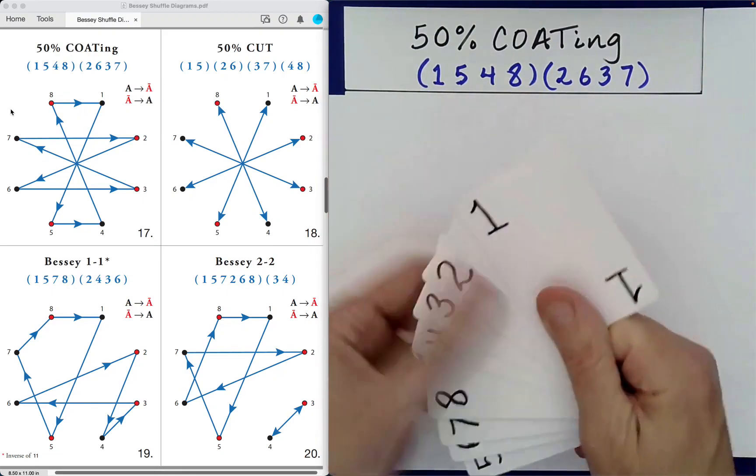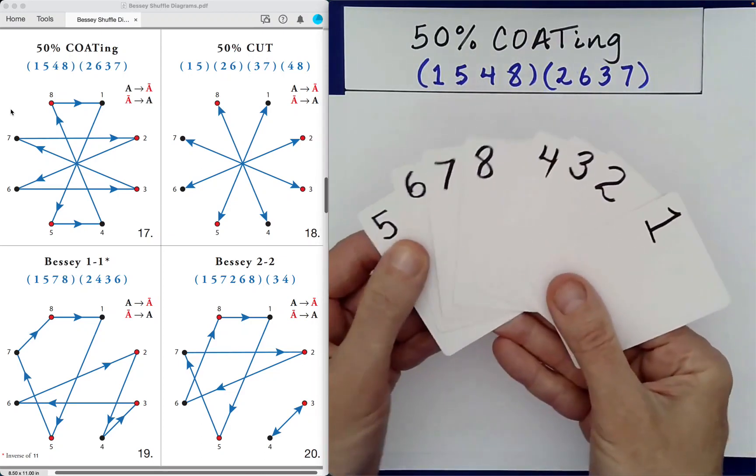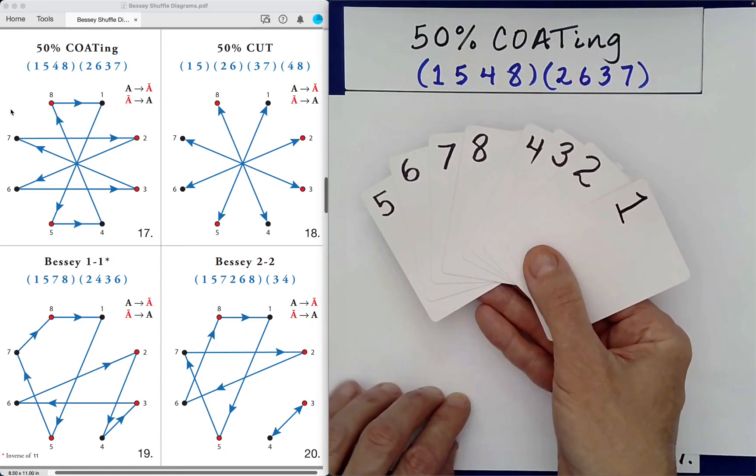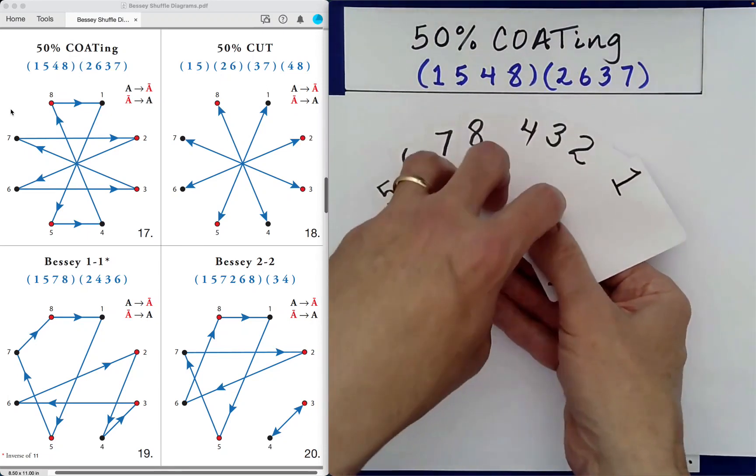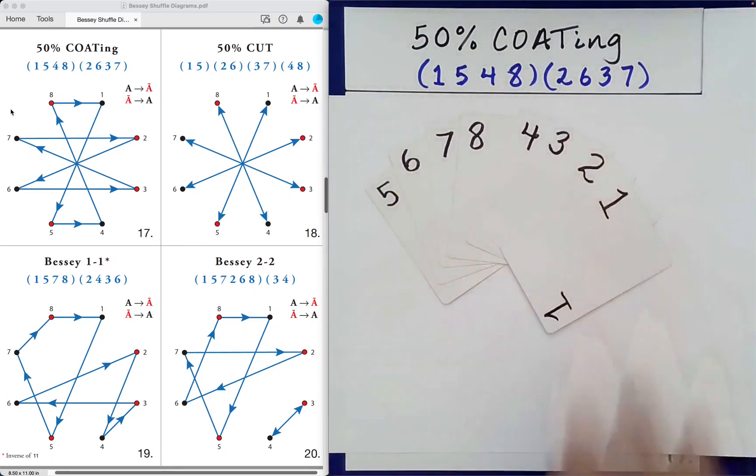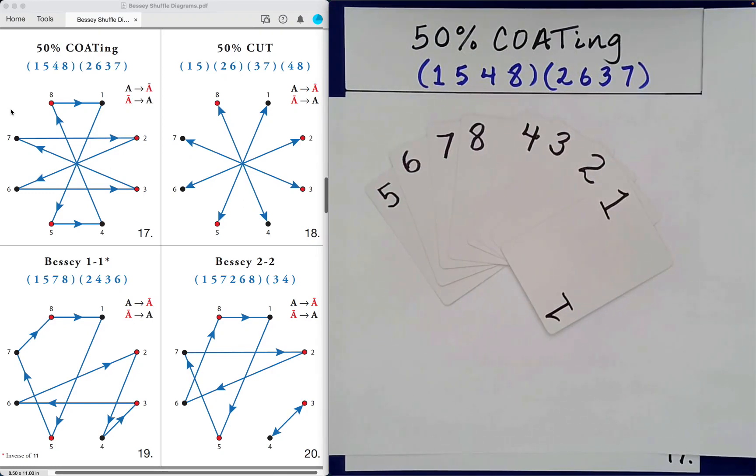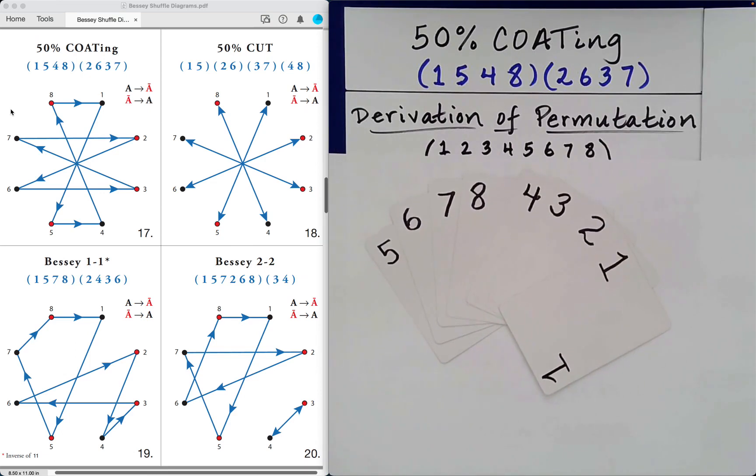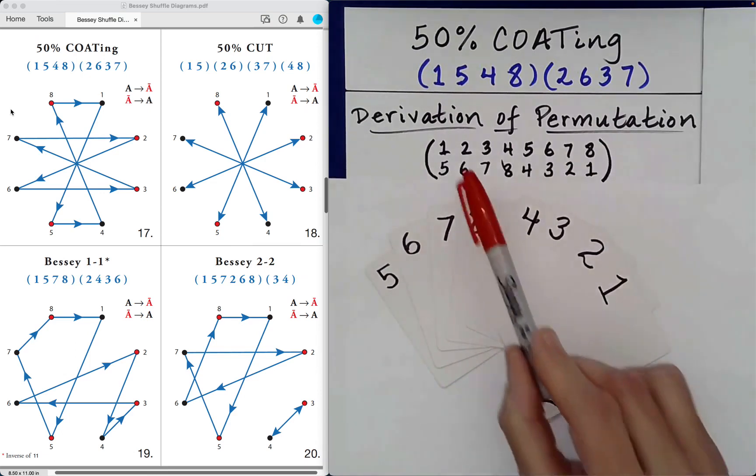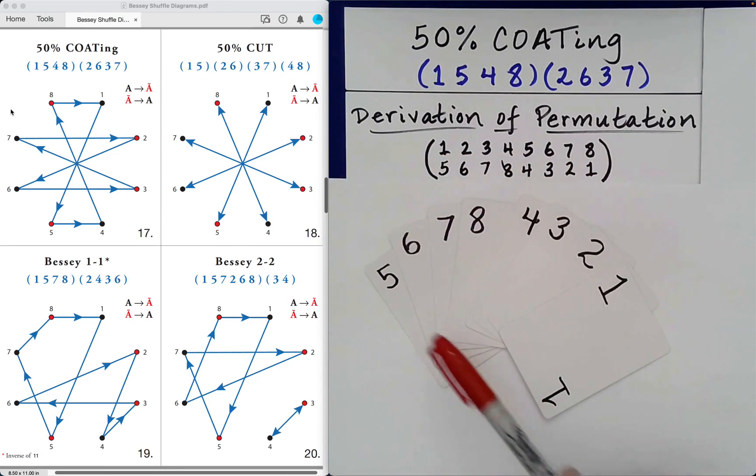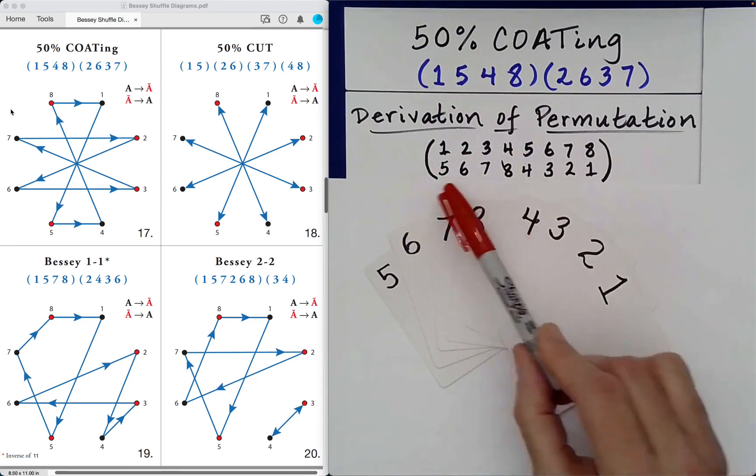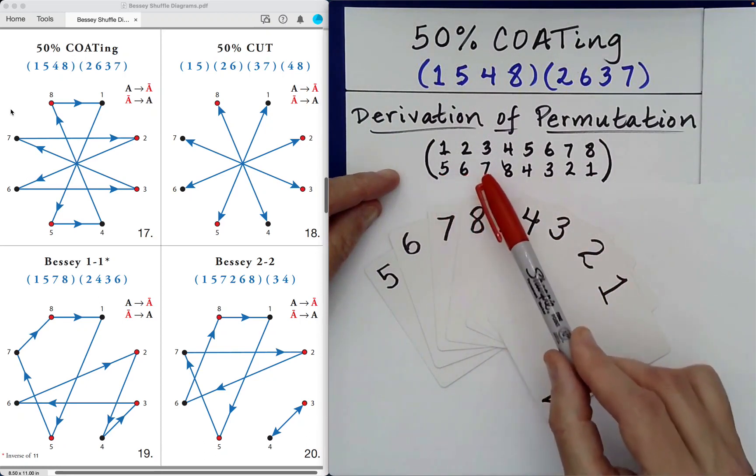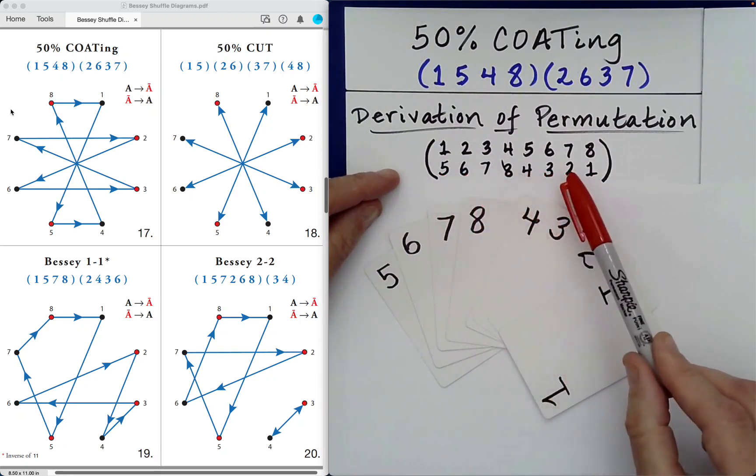By the way, the word COAT stands for COUNT OUT AND TRANSFER. It's an acronym. So here is the new ordering of the cards. We can now write the Cauchy 2 line notation for our permutation. It will be as follows. The top row consisting of 1 through 8 and our new ordering making up the bottom row. So we see that we have 5, 6, 7, 8, 4, 3, 2, 1.